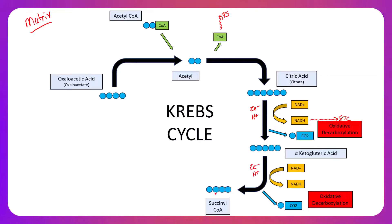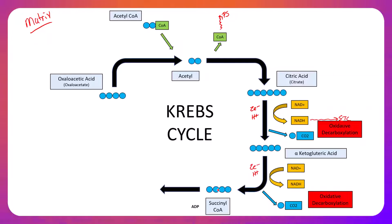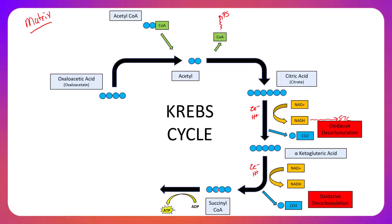There are still electrons and hydrogen ions we can squeeze out of these intermediates, but we will not remove any more carbon from the compound. From succinyl-CoA we can squeeze a little energy out in the form of ATP: ADP comes in, a phosphate is added turning it into ATP, and that converts succinyl-CoA into succinic acid.